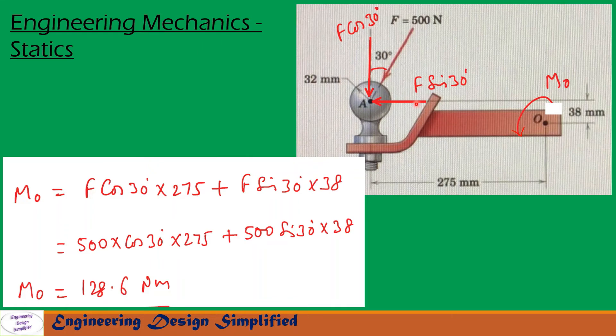The moment due to these two forces about O can be written as M_O = F cos 30 × 275 + F sin 30 × 38. The moment due to F cos 30 is this force times this distance, plus F sin 30 times this distance.